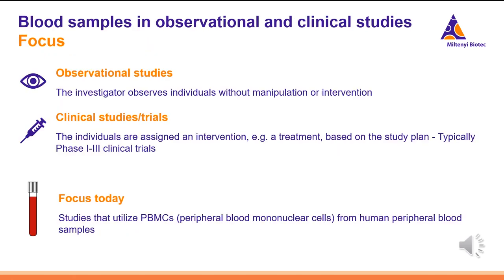When we talk about observational and clinical studies, there's a huge bandwidth of various study types. With observational studies, very broadly, we mean a study type where the investigator observes individuals without manipulation or intervention. With clinical studies or trials, we mean studies where individuals are assigned an intervention — for example, a treatment based on a study plan — typically phase one to three clinical trials. Today, we'll only be talking about studies that utilize PBMCs from human peripheral blood samples.